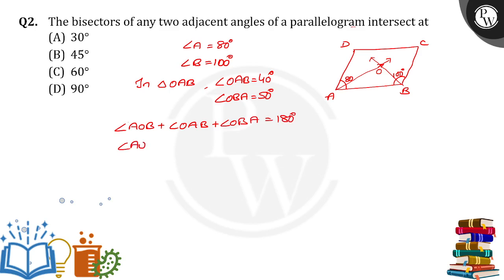So angle AOB plus 40 degrees plus 50 degrees is equal to 180. By simplifying, we will get angle AOB is equal to how much? 90 degrees. That means, in a parallelogram, the bisectors of any two adjacent angles intersect at 90 degrees. Thank you.